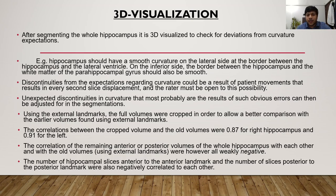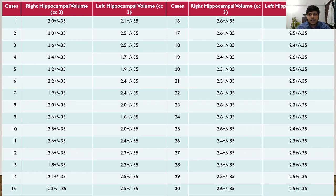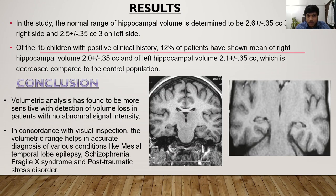The correlation between the cropped volume and the old volume was 0.87 for the right hippocampus and 0.91 for the left. The correlation of the remaining anterior or posterior volumes of the whole hippocampus with each other and with old volumes using external landmarks were however all weakly negative. The number of hippocampal slices anterior to the anterior landmark and the number of slices posterior to the posterior landmark were also negatively correlated with each other. This was the result obtained after performing the sequences on all 15 controls and cases. The normal range of hippocampal volume is determined to be 2.6 ± 0.35 cm³ on the right side and 2.5 ± 0.35 cm³ on the left side.